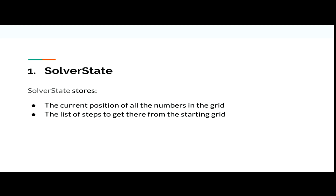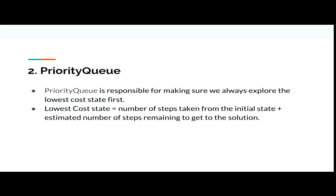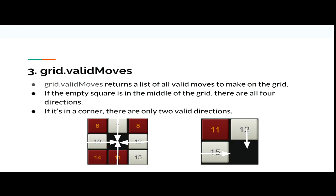Firstly, solver state actually stores the current position of all the numbers in the grid, and it also stores the list of the steps to get there from the starting grid. Another one would be Priority Queue, which is responsible for making sure we always explore the lowest cost state first. The lower cost state is equal to the number of steps taken from the initial state plus the estimated number of steps remaining to reach the solution. Lastly, grid.validmoves returns a list of all valid moves to make on the grid.